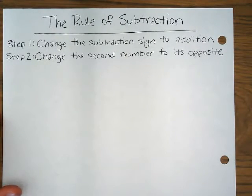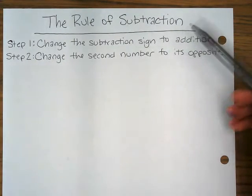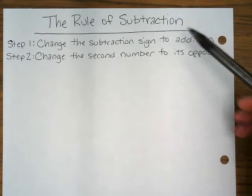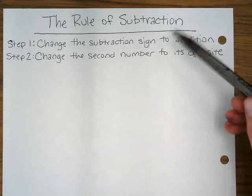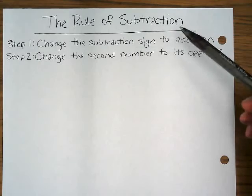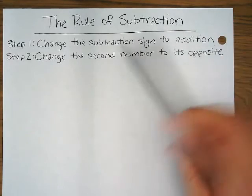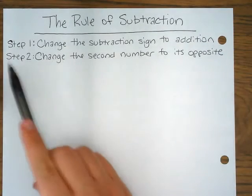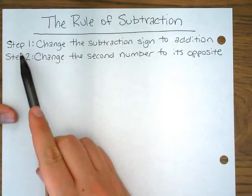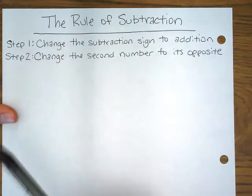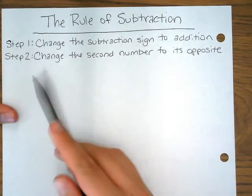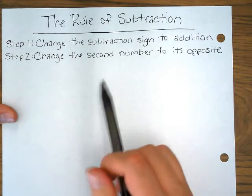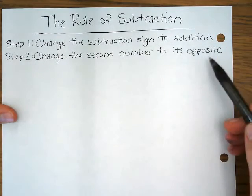Right now we're going to talk about the rule of subtraction. The rule of subtraction is another strategy that you can use to help you solve subtraction problems. In the rule of subtraction there are two steps. Step one says change the subtraction sign to addition. And step two says change the second number to its opposite.